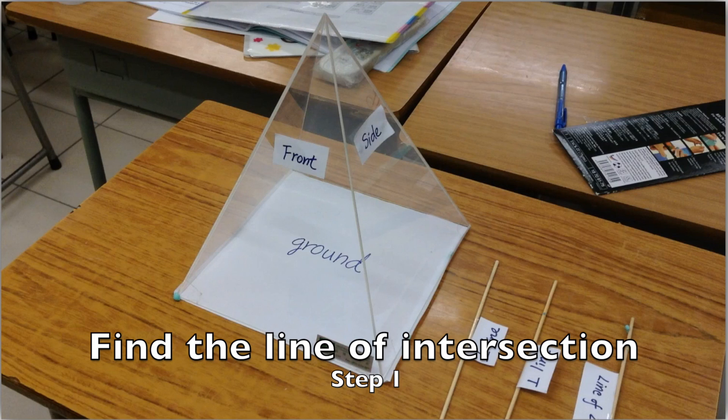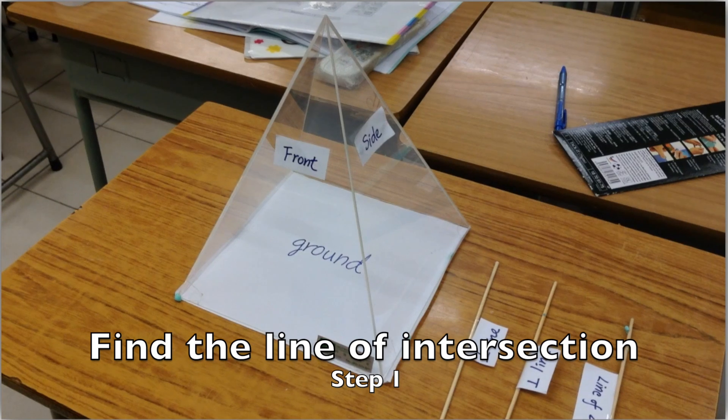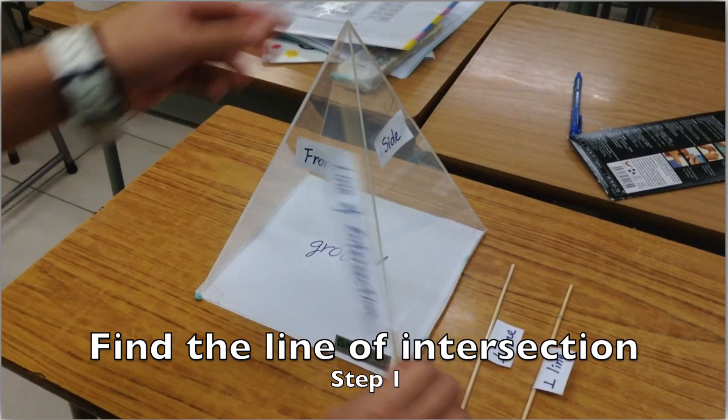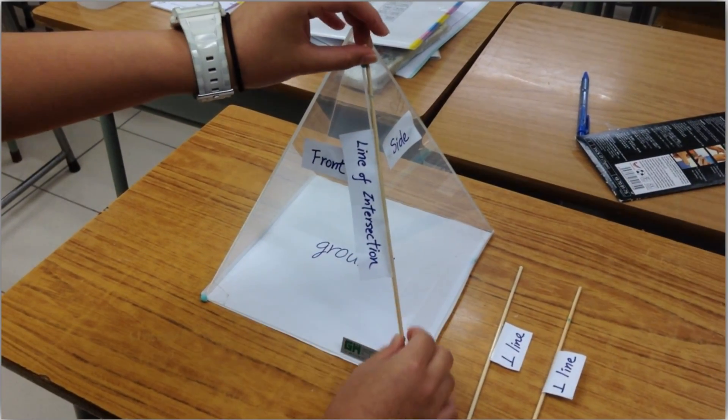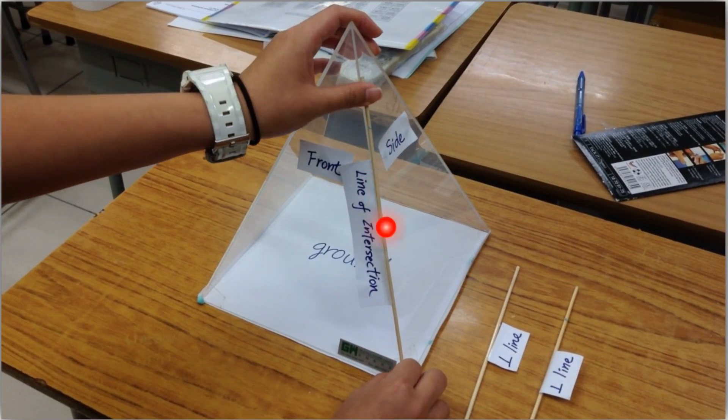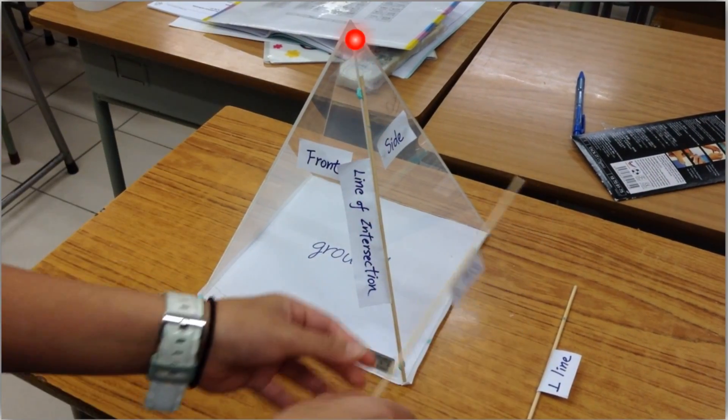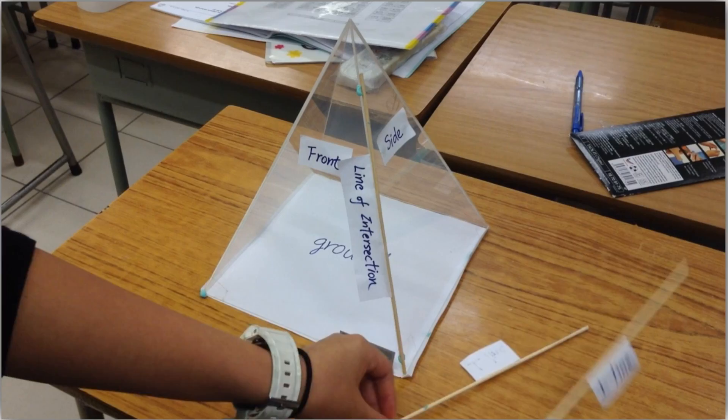And again, we have step one. First, we have to find the line of intersection of the two planes. So in this case, it will be this line. This will be the line of intersection of the two planes, of the front plane and the side plane.